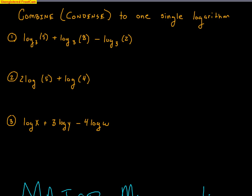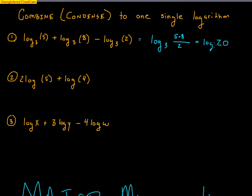Now let's look at examples where the instructions are to combine, or condense, to one single logarithm. The first problem has three logs: log base 3 of 5 plus log base 3 of 8 minus log base 3 of 2. The addition means multiplication, and the subtraction means division. So the answer is log base 3 of (5 times 8 divided by 2). That's log base 3 of 40 divided by 2, which is log base 3 of 20.